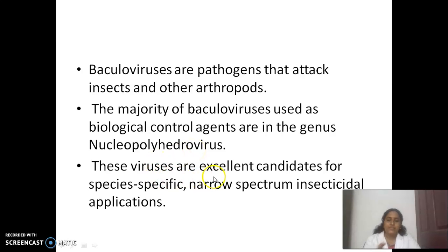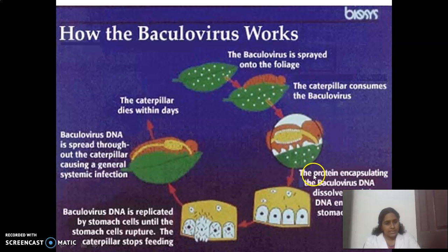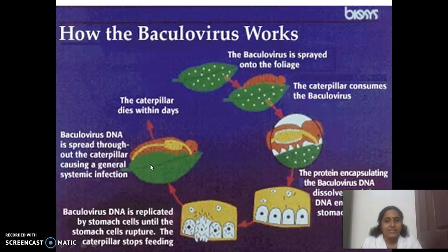These viruses are excellent candidates for species-specific, narrow-spectrum insecticidal applications. When baculovirus is sprayed on a leaf and a caterpillar consumes it, the protein encapsulating the baculovirus DNA dissolves and the DNA enters the stomach cell of the caterpillar. The baculovirus DNA is replicated by stomach cells until they rupture; the caterpillar stops feeding, and the DNA spreads throughout, causing a general systemic infection. The caterpillar dies within days.